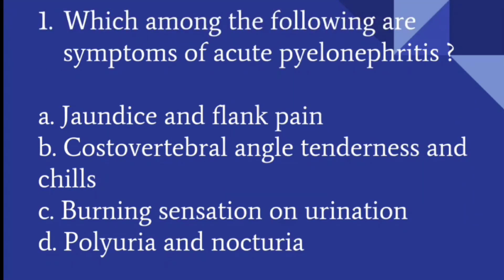Which among the following are symptoms of acute pyelonephritis? The answer is costo-vertebral angle tenderness and chills. The costo-vertebral angle is the junction of the 12th rib and the spine. When you do abdominal palpation under the 12th rib, the patient will have pain along with chills and fever. This is the classical sign of acute pyelonephritis or any kidney pathology.